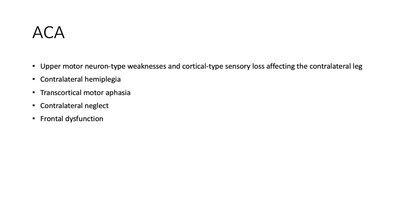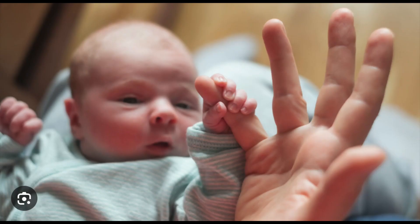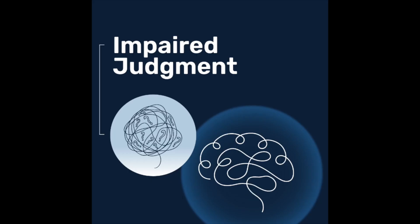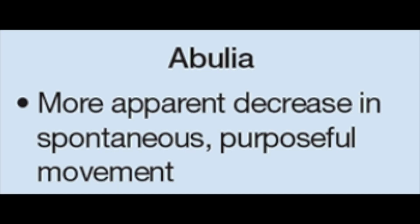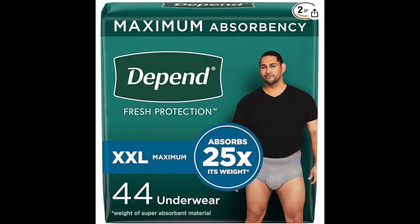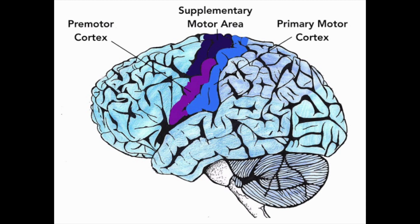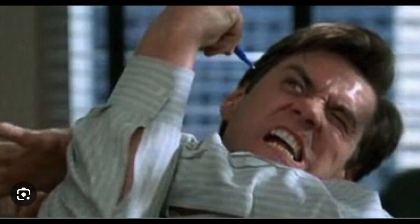ACA infarcts can also cause frontal lobe dysfunction depending on the size of the infarct, including a grasp reflex, impaired judgment, flat affect, apraxia, abulia, and incontinence. Sometimes damage to the supplementary motor area and other regions in the frontal lobe causes alien hand syndrome — movements of the contralateral arm that are not under voluntary control.